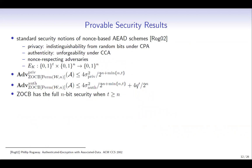Regarding provable security results, we follow the standard security notions of nonce-based AEAD schemes. For privacy, we consider indistinguishability from random bits under chosen plaintext attacks. For authenticity, we consider unforgeability under chosen ciphertext attacks. In both cases, we consider nonce-respecting adversaries only. Assuming a tweakable block cipher with t-bit tweaks and n-bit blocks, we can prove theorems on privacy and authenticity showing that ZO-CB has full n-bit security when the tweak length is at least the block length.